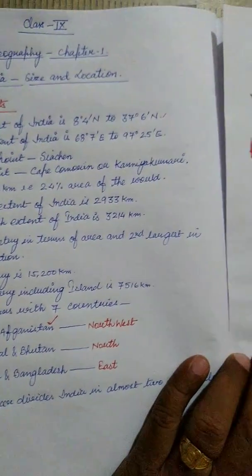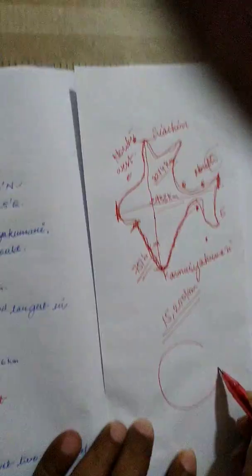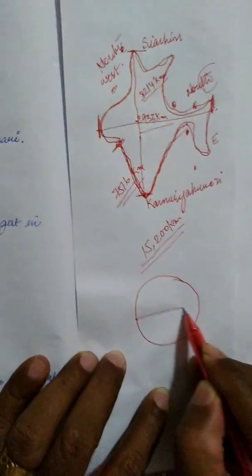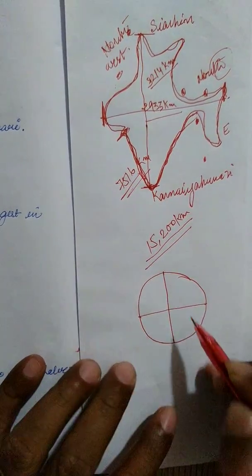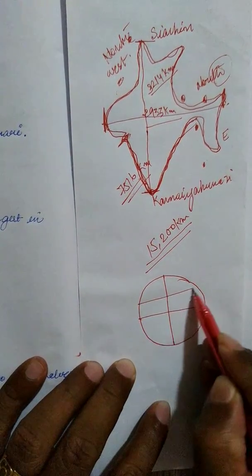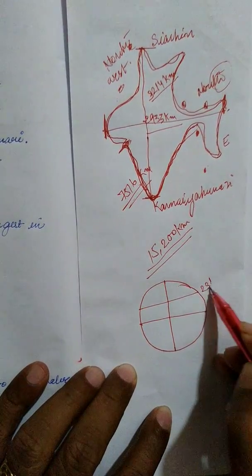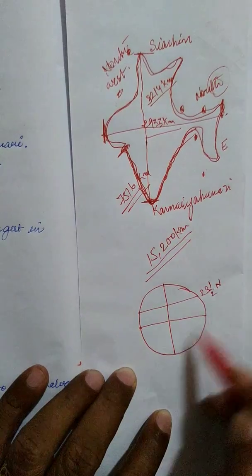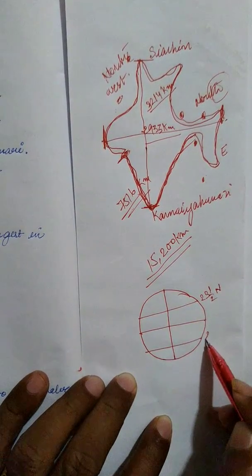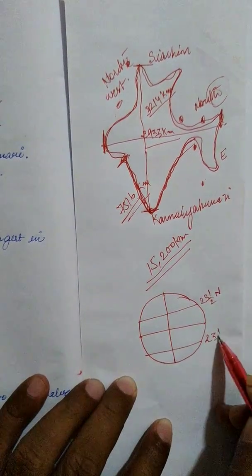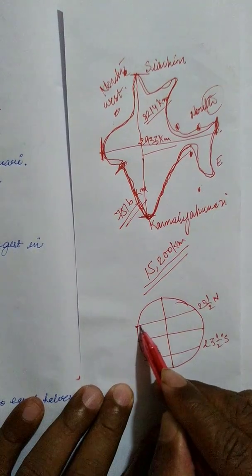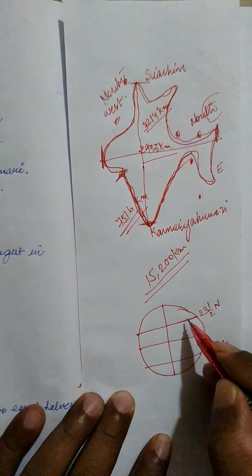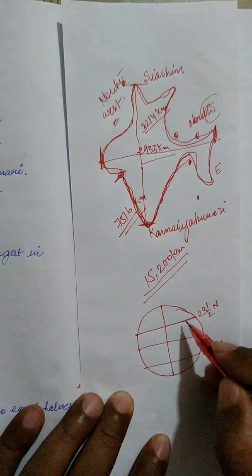The Tropic of Cancer — as you know, the equator divides the globe into equal halves and so does the prime meridian. The Tropic of Cancer has a latitude of 23 and a half degrees north and the Tropic of Capricorn has a latitude of 23 and a half degrees south. The Tropic of Cancer divides India into almost two equal halves.